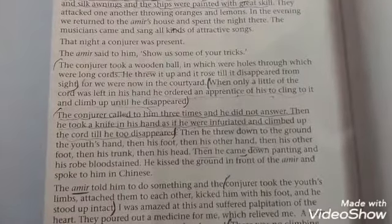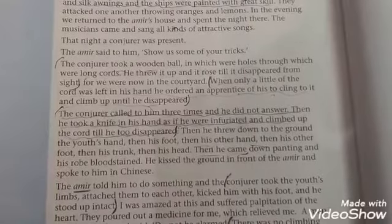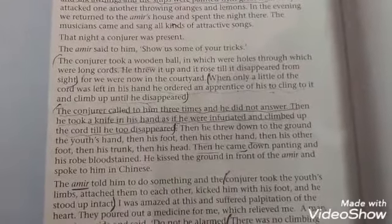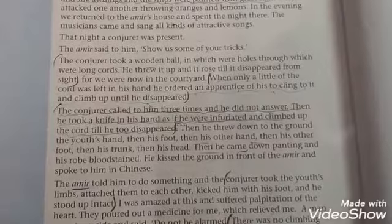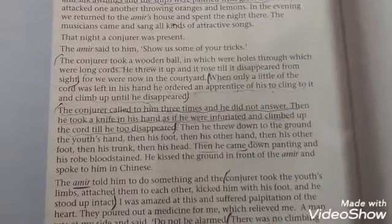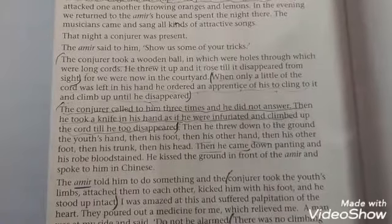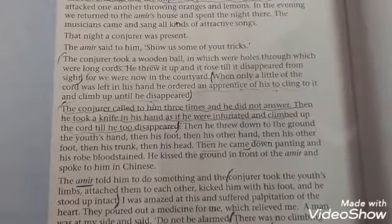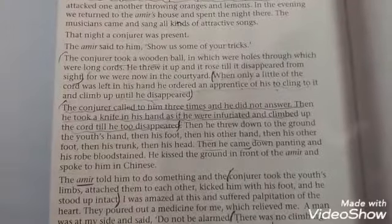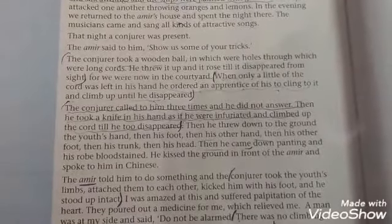The apprentice climbed up until he disappeared too. The conjurer called to him three times and he did not answer. Then the conjurer took a knife in his hand as if he were infuriated, and climbed up the cord till he too disappeared.